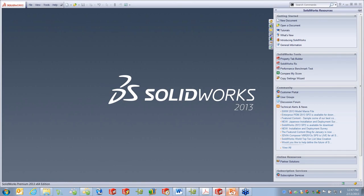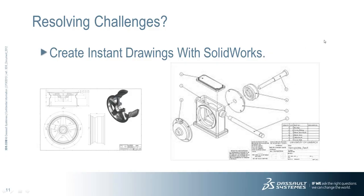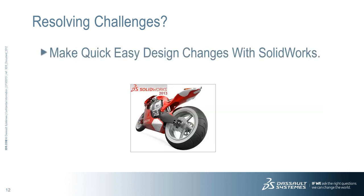You're going to get isometrics, section views, and be able to put the drawing views on that you need. That's often a challenge with the 2D world — you don't put too much in there because it's a lot to update. For quick, easy design changes: if I make a change to the part, it changes in the drawing. It often gets said you can create the initial 2D drawing in about the same time as creating the 3D model and drawing. But when it comes to making changes, you can almost always make the change quicker with SolidWorks than with a 2D tool.